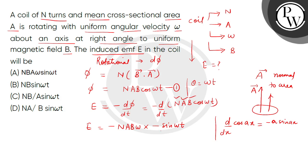Minus multiplied by minus gives plus. So E equals N·A·B·omega·sin(omega·t). The correct answer is option A. Thank you.